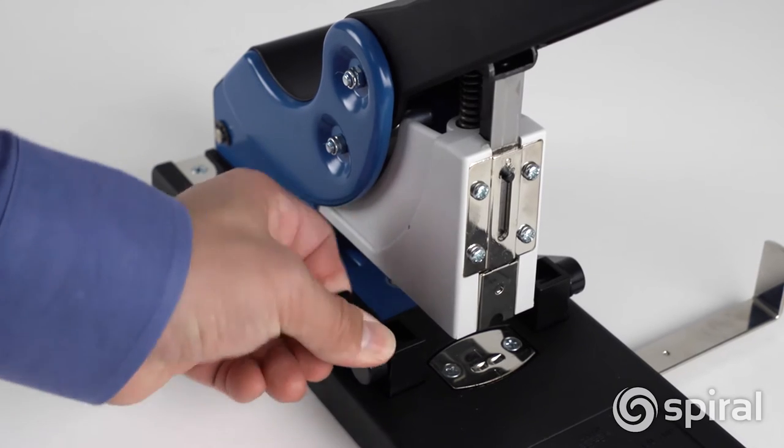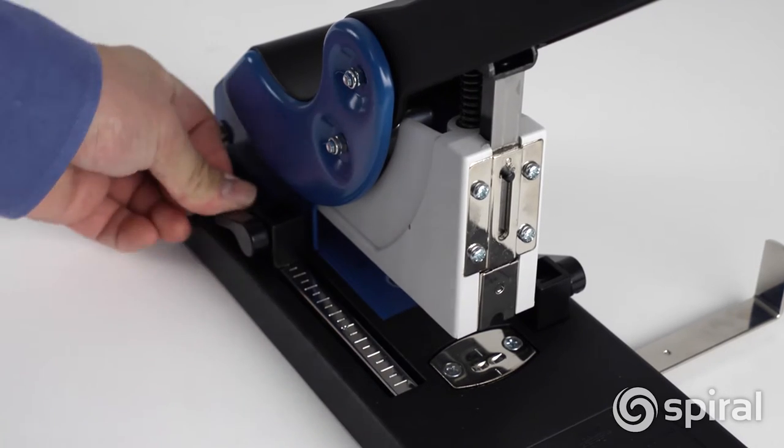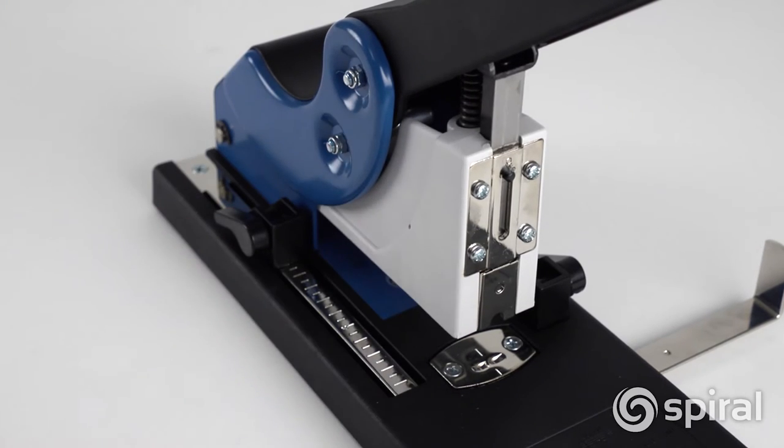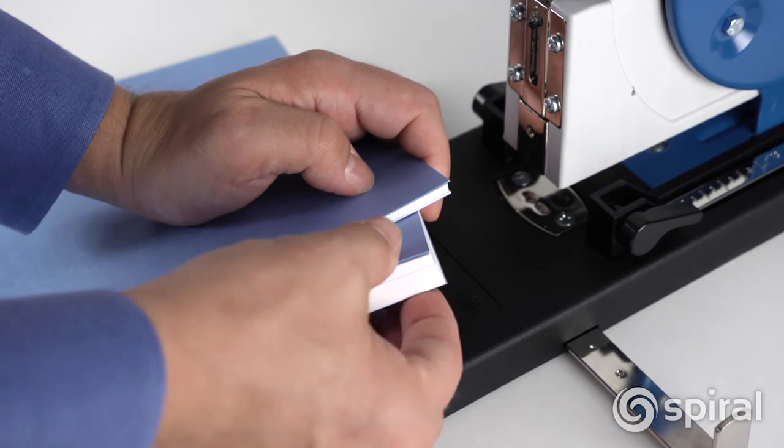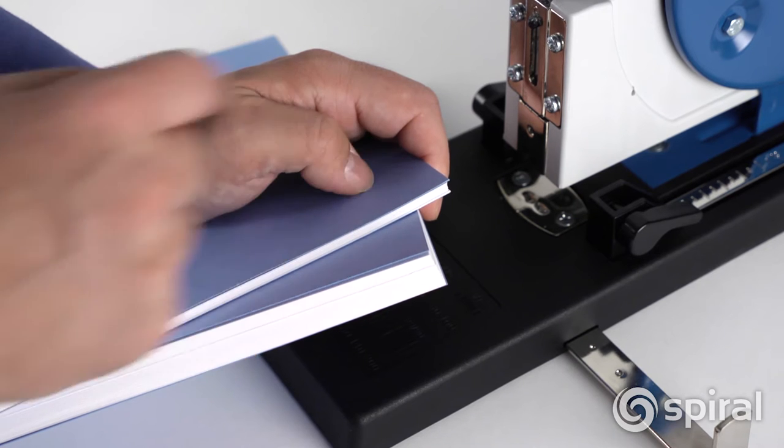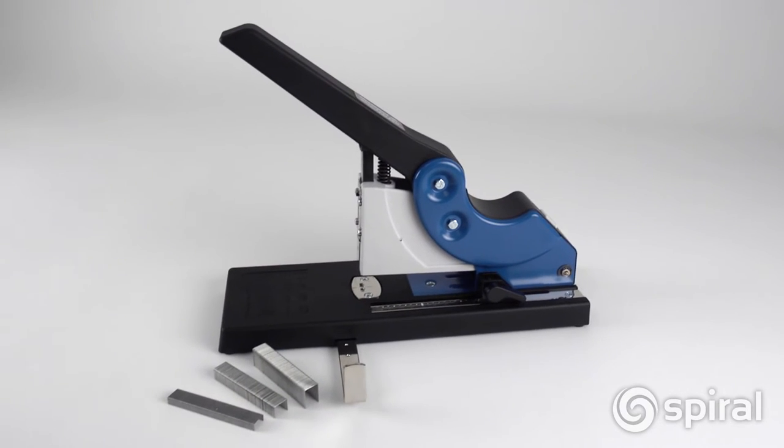The stapling depth can be adjusted from one-eighth inch up to four inches. The Lasko Weiser W117R stapler easily staples up to 150 sheets at once using a variety of sizes of heavy-duty staples.